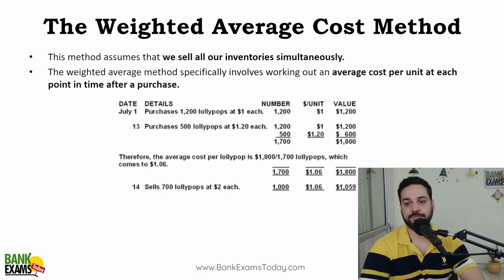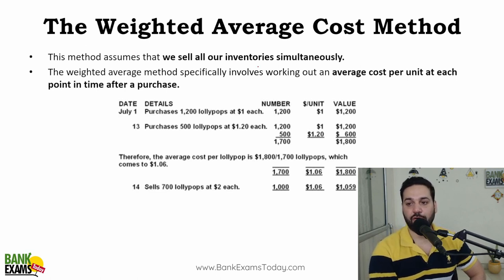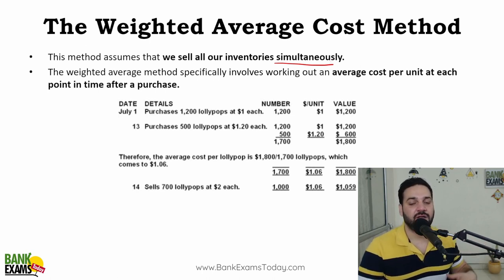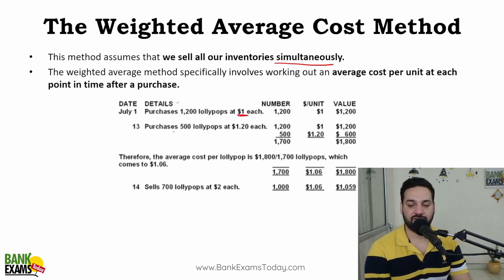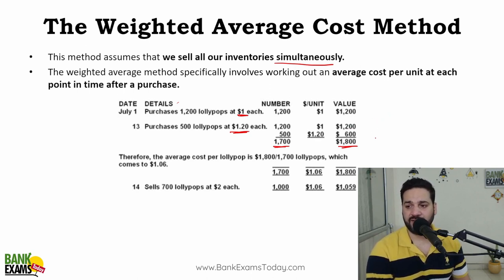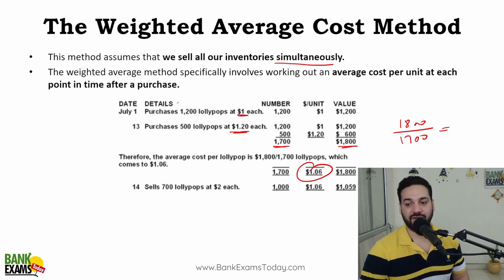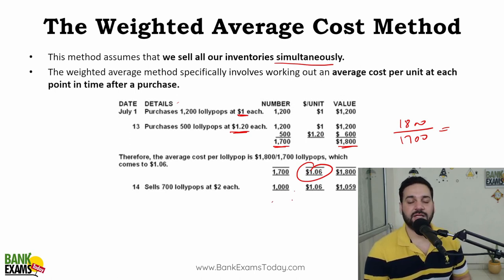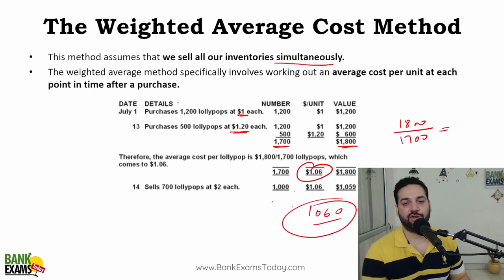The weighted average cost method assumes that we sell all inventory simultaneously — that is, inventories bought at the beginning or middle of the year are all sold at once. We have 1700 lollipops with a total value of $1,800. The weighted average is 1800 divided by 1700, which equals $1.06. If you consumed 700 lollipops, 1000 are left, and the value is 1000 multiplied by $1.06, giving a closing stock value of $1,060.